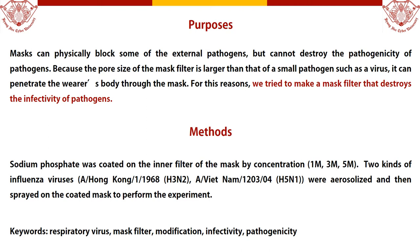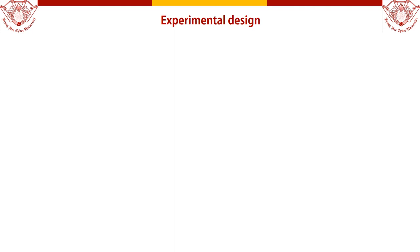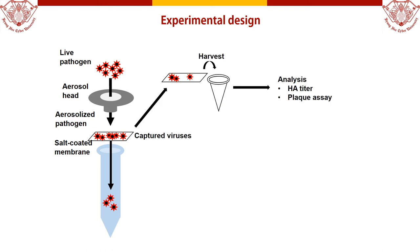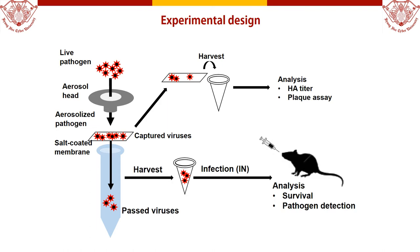To perform the experiment, sodium phosphate was coated on the inner filter of the mask by concentration. Two kinds of influenza viruses were utilized and spread on the coated filter. The live virus was aerosolized and spread into a salt-coated mask filter. The virus captured in the filter was harvested and an in vitro assay was performed. The virus that passed through the filter was also harvested and tested in an in vitro assay and animal study.